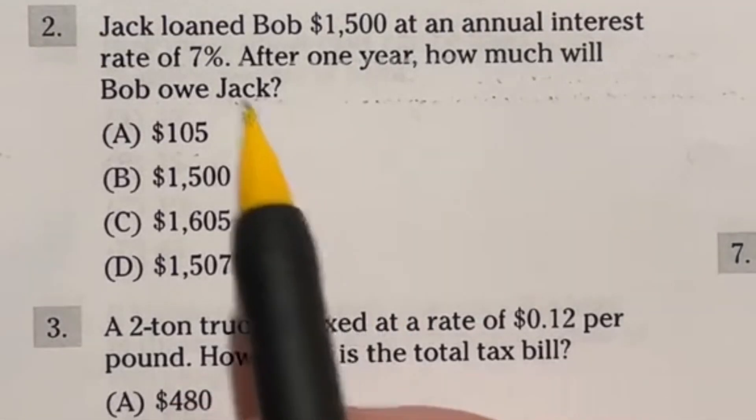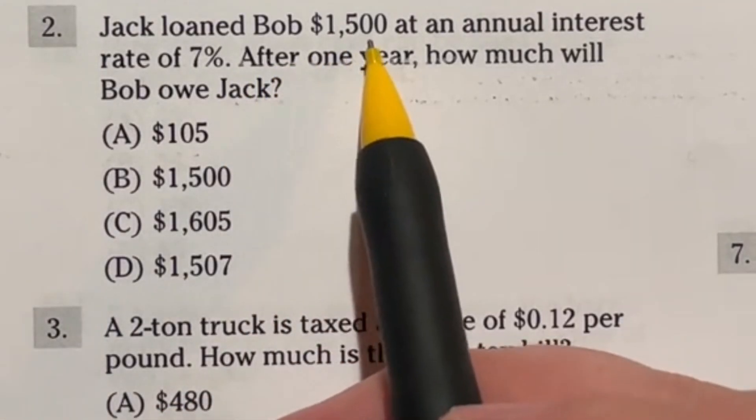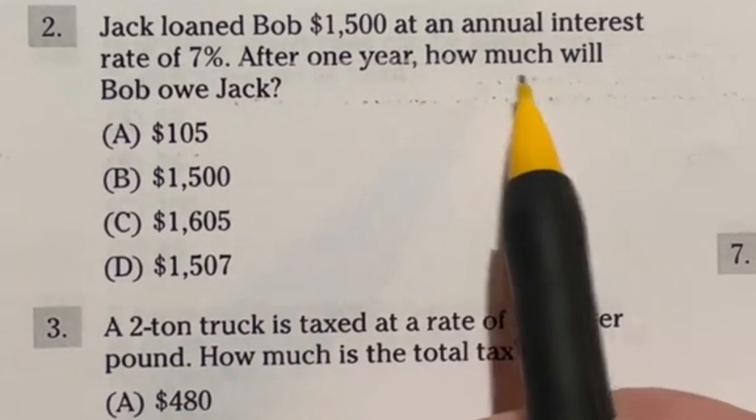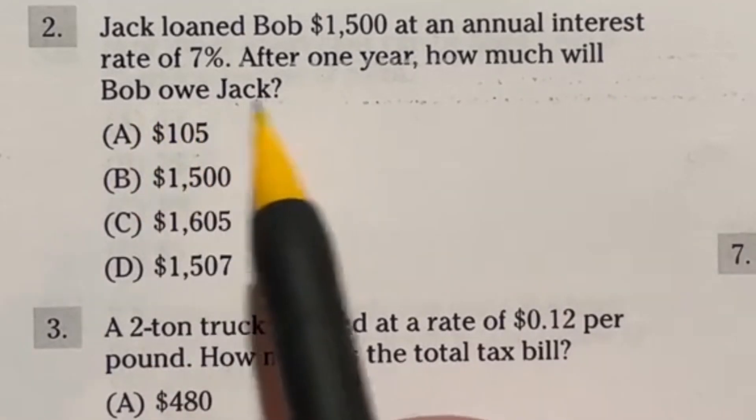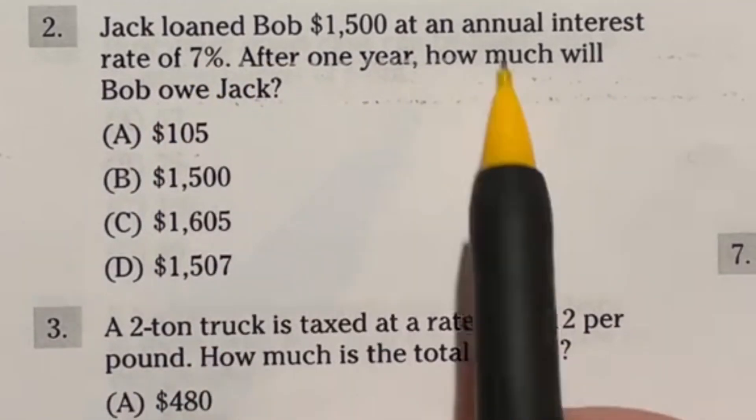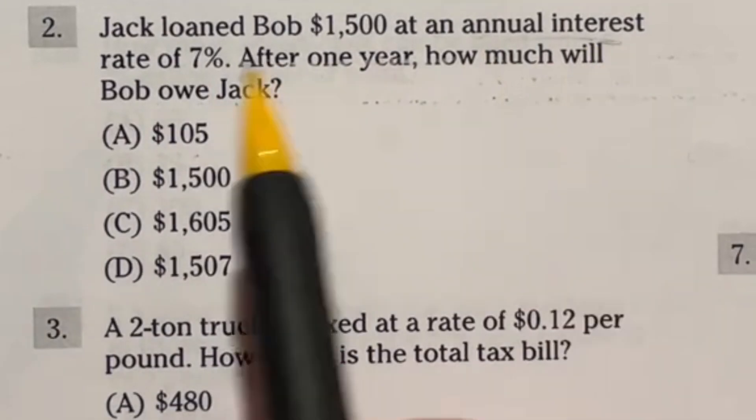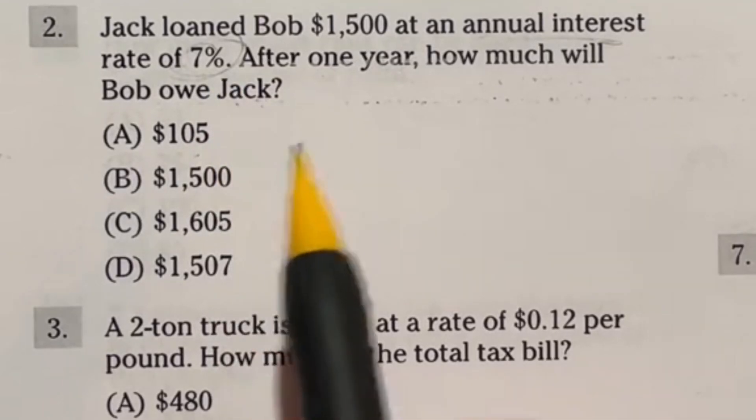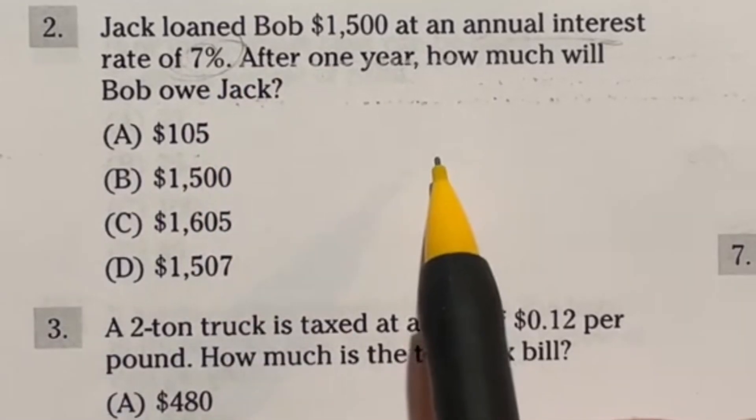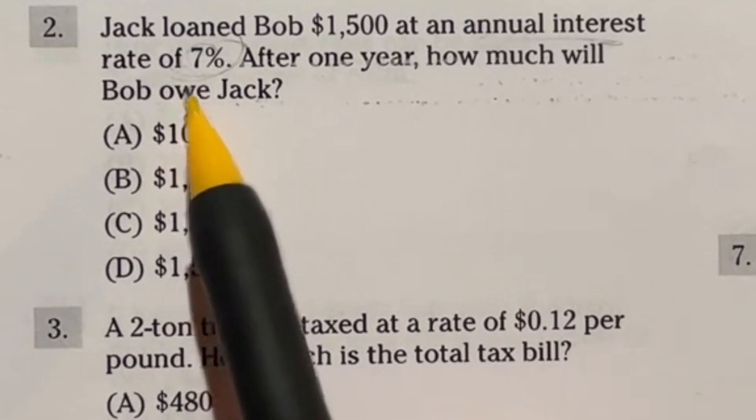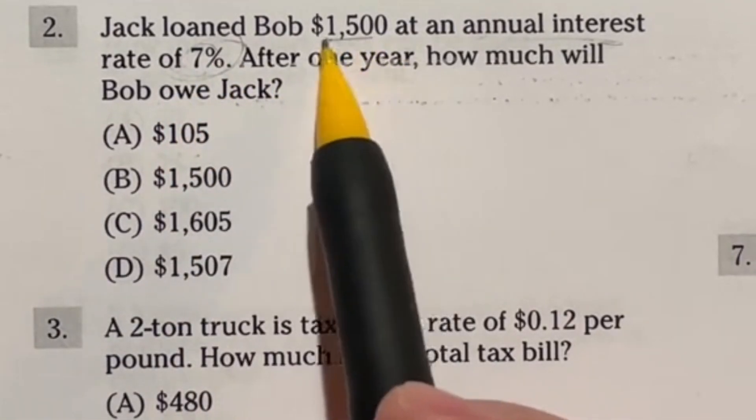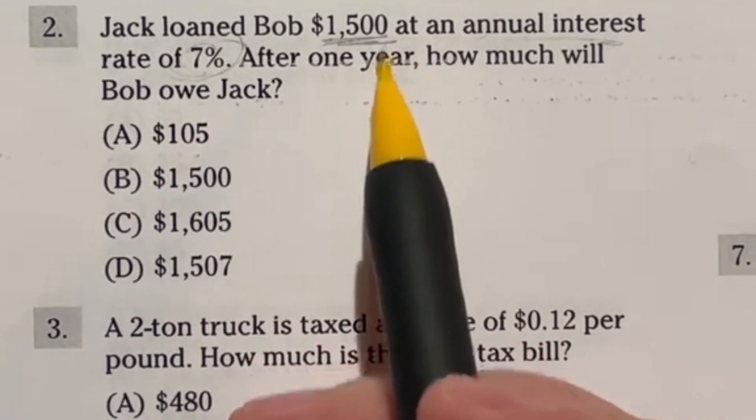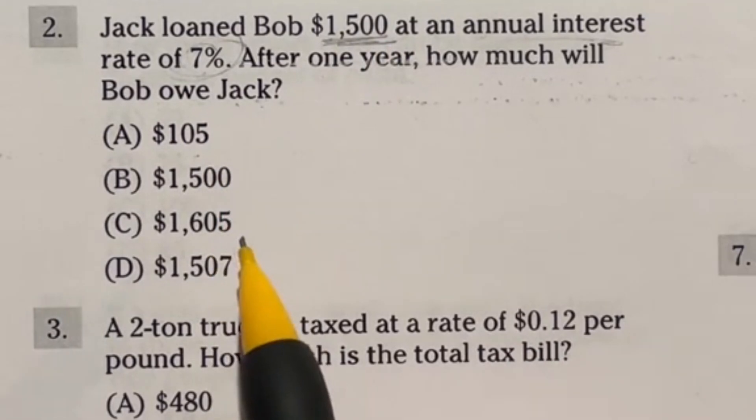Number two on the ASVAB says that Jack loaned Bob fifteen hundred dollars at an annual interest rate of seven percent. After one year how much will Bob owe Jack? So here's the deal it says an annual interest rate which means they're only applying this seven percent one time. Now I guess that we're assuming that he's not paying any back here or anything like that. So essentially we need to find out what is seven percent of this fifteen hundred and then we need to add that to the fifteen hundred to find the new total that he has to do.